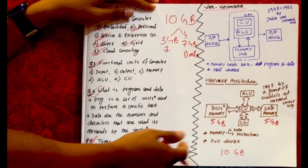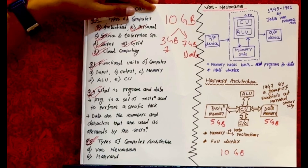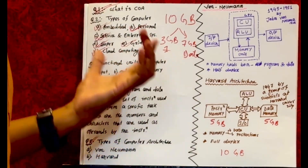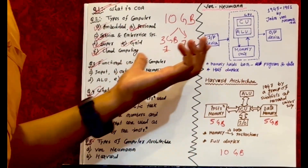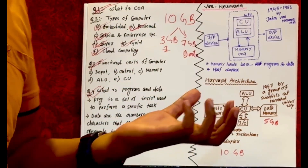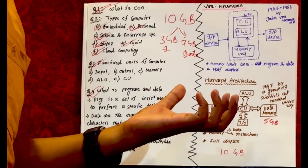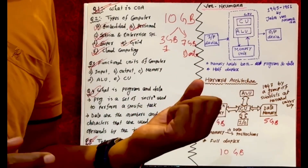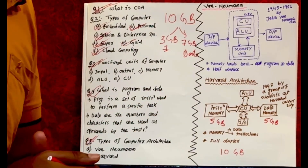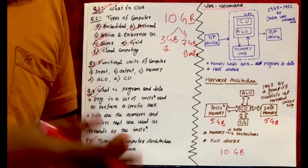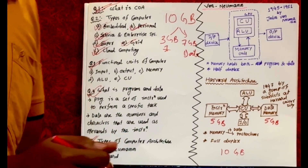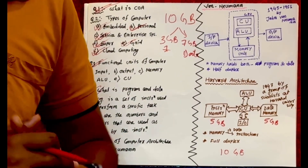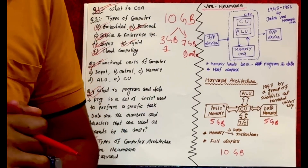So there are advantages and disadvantages in both architectures. That covers the basic concepts of COA for today. In the next class we'll discuss other topics. Thank you everyone for watching.